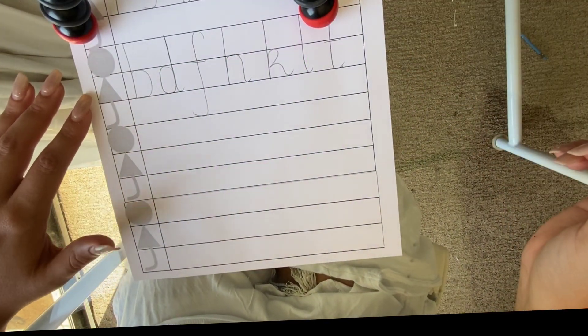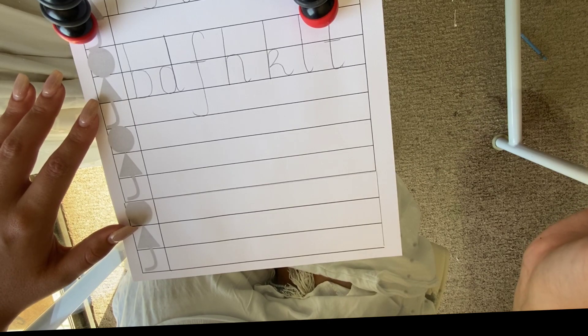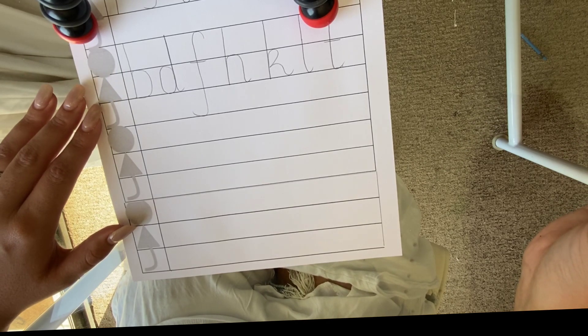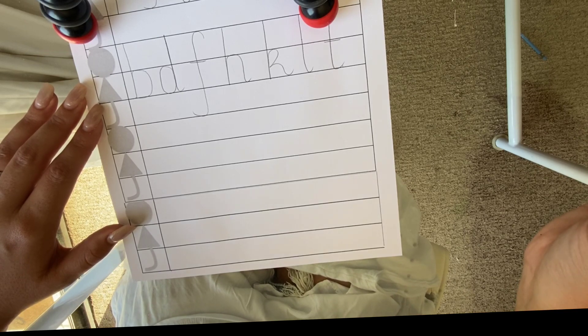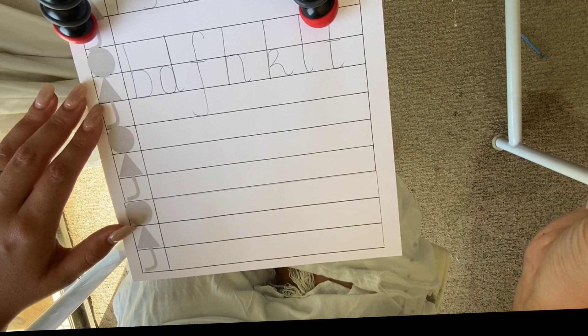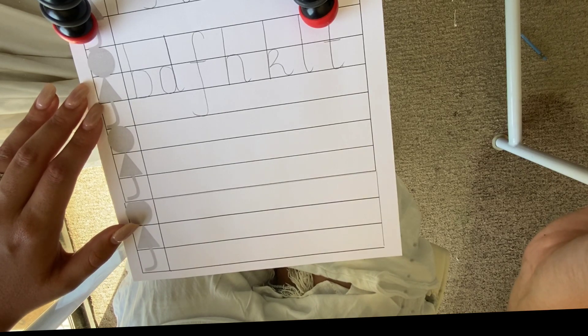Right, now that you've practiced those, we are now going to do cat tummy and tail letters. These letters sit on the tummy line but they have a tail that hangs under the line just like Oscar's.